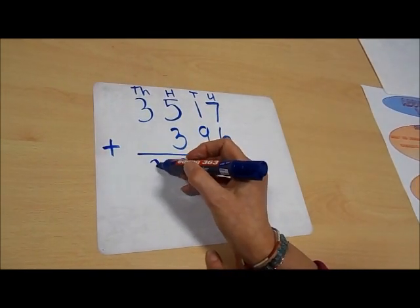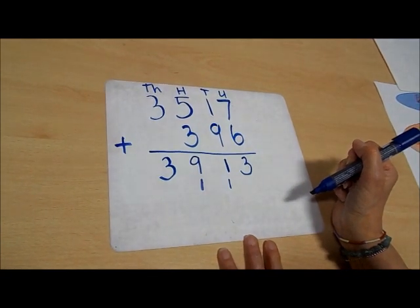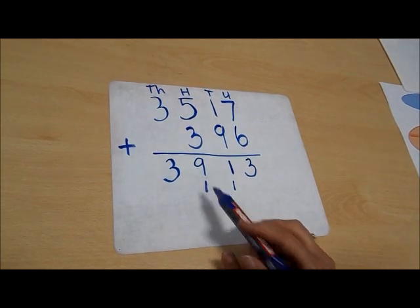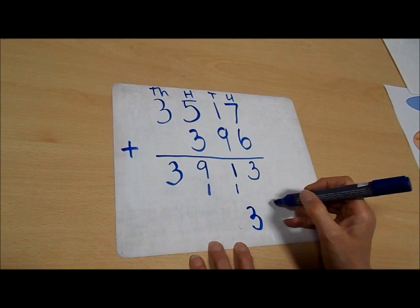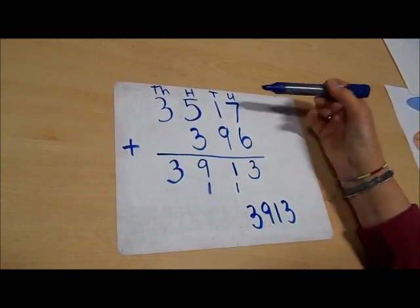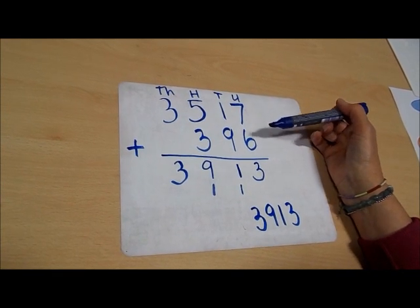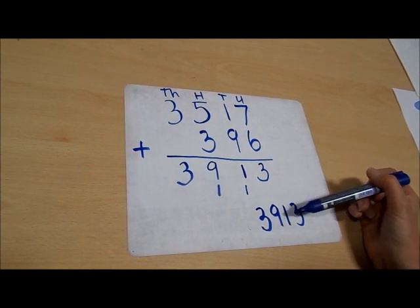So that is the number we're going to write there, and we get our answer: three thousand nine hundred and thirteen. So our answer is 3517 add 396 equals 3913.